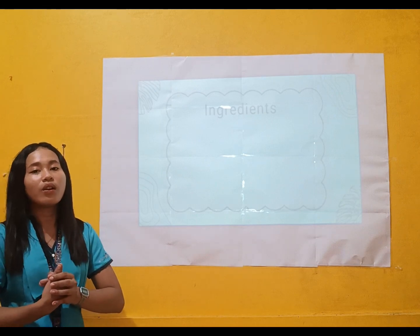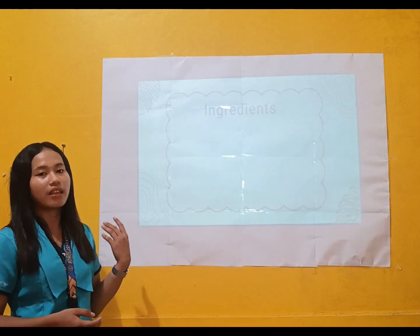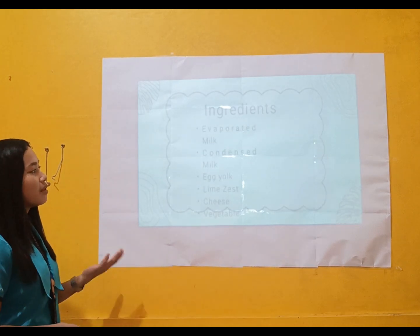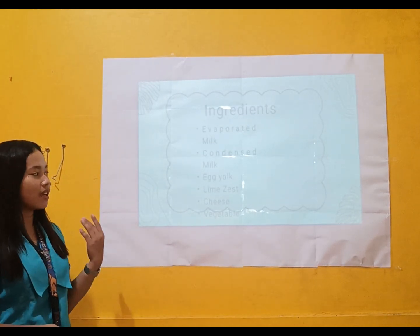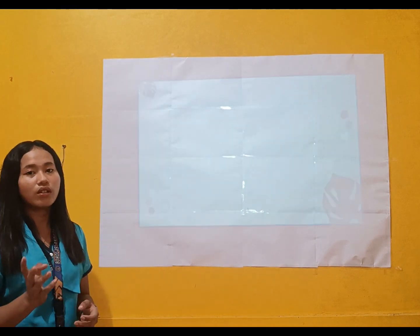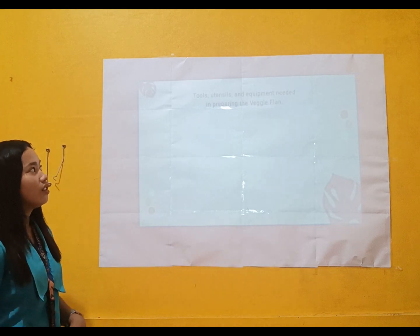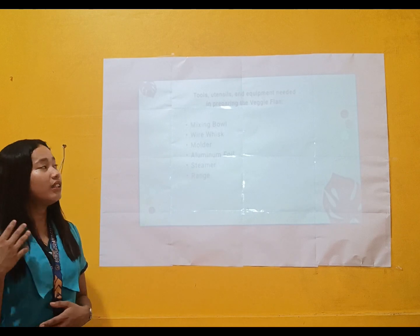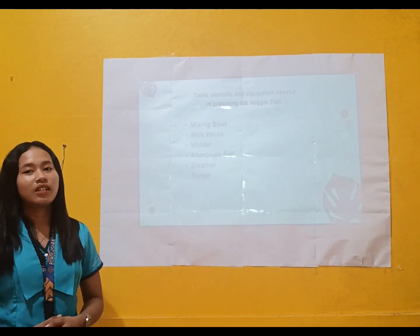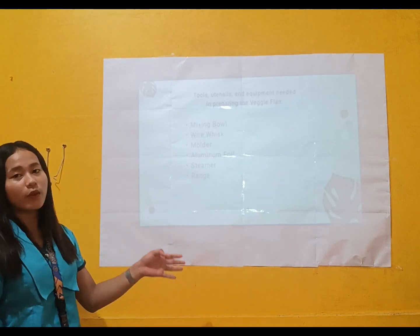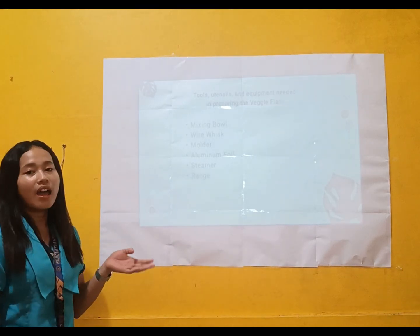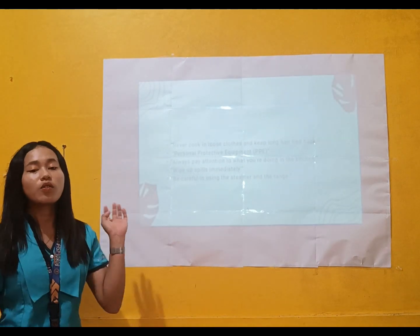In veggie flan, the ingredients needed are: evaporated milk, condensed milk, egg yolk, lime zest, cheese, and the vegetable you are going to use. The tools, utensils, and equipment needed include: mixing bowl, wire whisk, molder, aluminum foil, steamer, and the range.